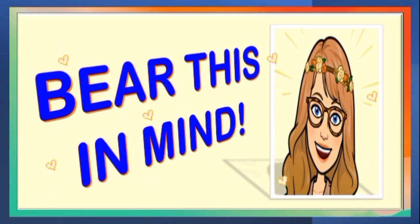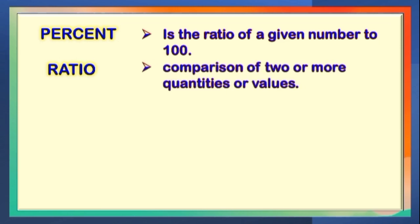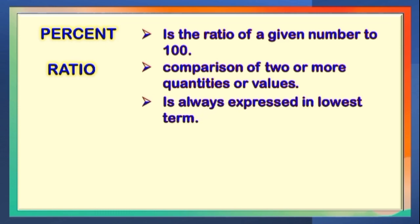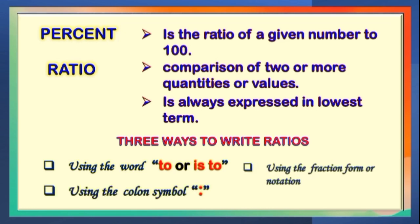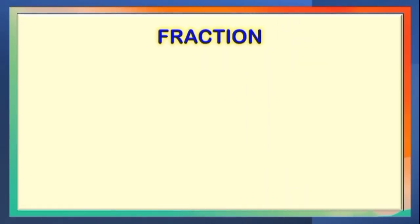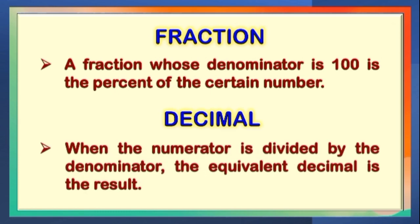Children, bear this in mind. Percent is the ratio of a given number to 100. Ratio is the comparison of two or more quantities or values, and it is always expressed in lowest term. There are three ways to write ratios: using the word 'to' or 'is to,' using the colon symbol, and using the fraction form or notation. A fraction whose denominator is 100 is the percent of a certain number. When the numerator is divided by the denominator, the equivalent decimal is the result.